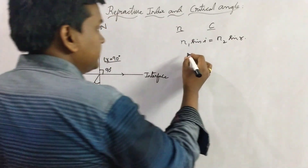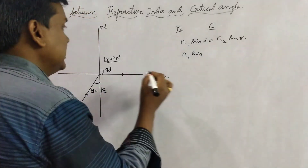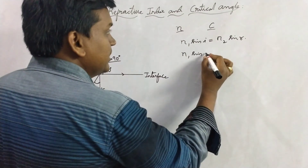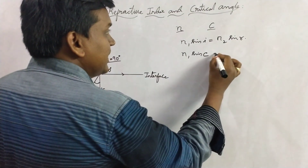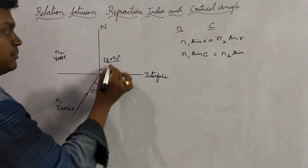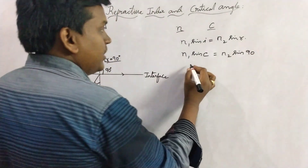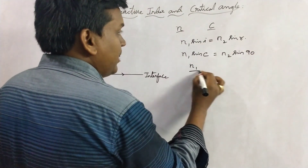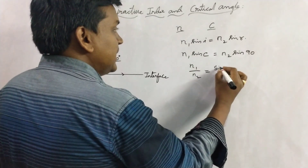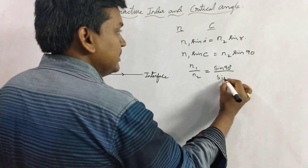So here we can write this as N1 sin C, since i is nothing but the critical angle C. So N1 sin C equals N2 sin R, where R equals 90 degrees. So sin 90. Rearranging, N1 by N2 equals sin 90 degrees by sin C.